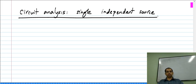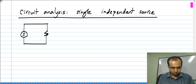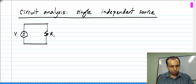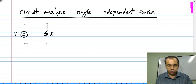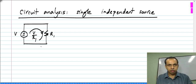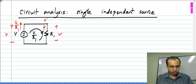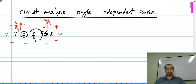We will first start from a really simple example and then work our way towards more complicated examples. Let us say we have a circuit like this: an independent voltage source connected to a resistor. Even before I wrote down the circuit, you know the answer — the current is V by R1. Even if you wanted every variable in the circuit, the voltage across this is V, the current is V by R1 in this direction, and the current is V by R1 in that direction. So you know the current and voltage across the two branches of the circuit, which are the voltage source and the resistor.